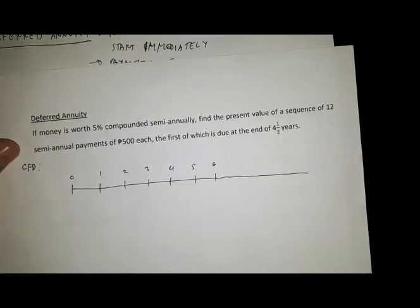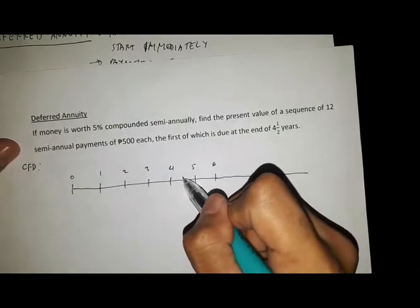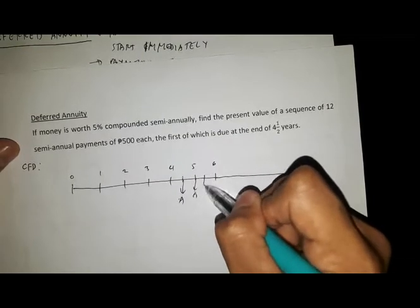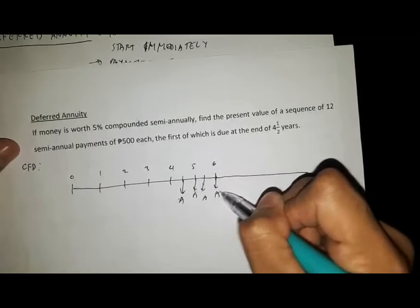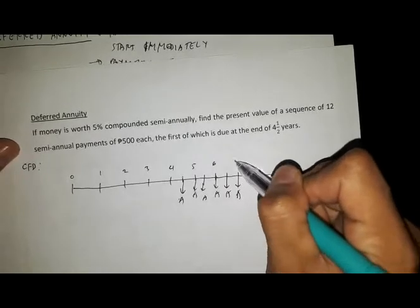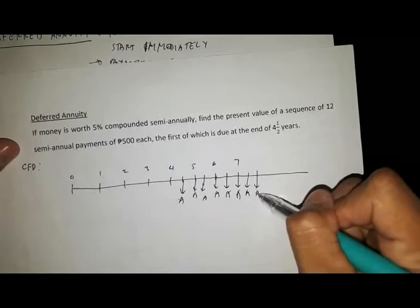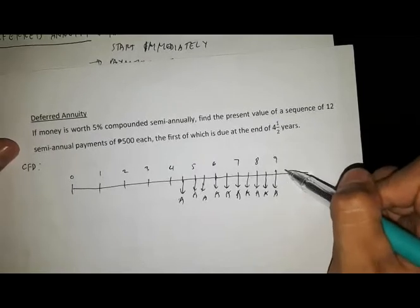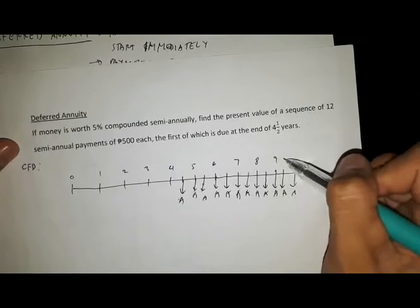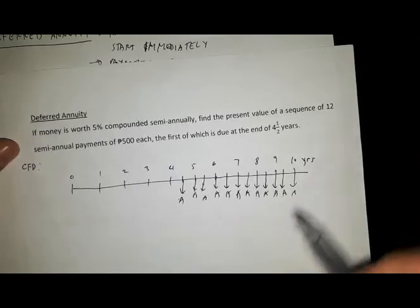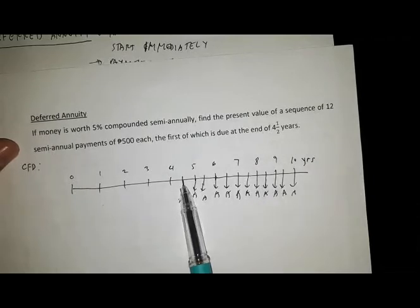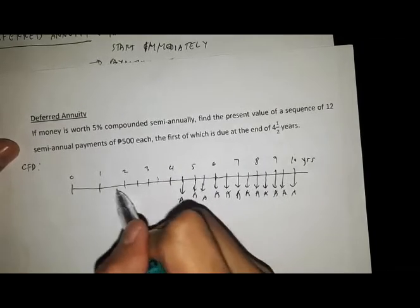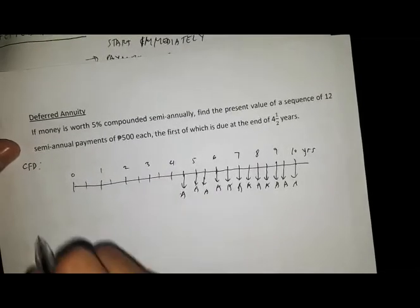The money is compounded semi-annually, and the payments will start at the end of four and a half years. We have 12 equal payments of 500 pesos — payments one through twelve — with the first payment starting at the end of four and a half years and the last payment at the end of ten years.